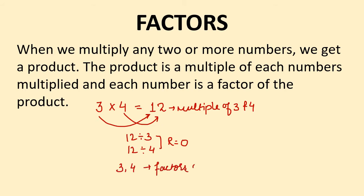Therefore, a factor of a number is the number that divides the given number completely. When we divide a number by another one and the remainder is 0, we can say that the divisor is the factor of the dividend.